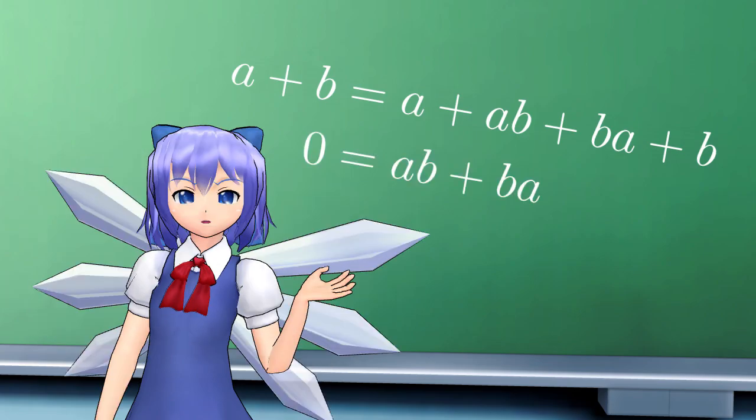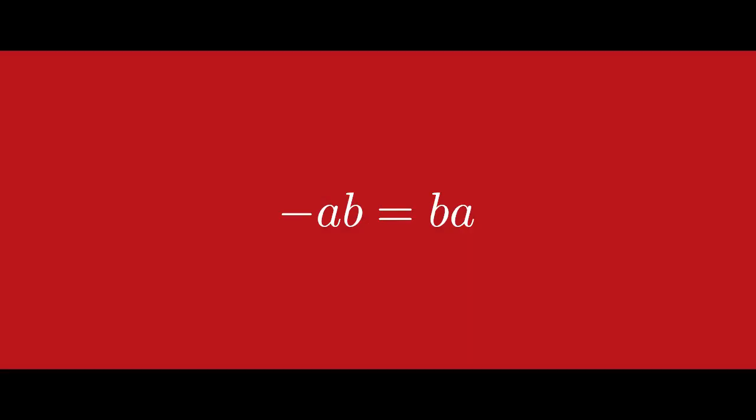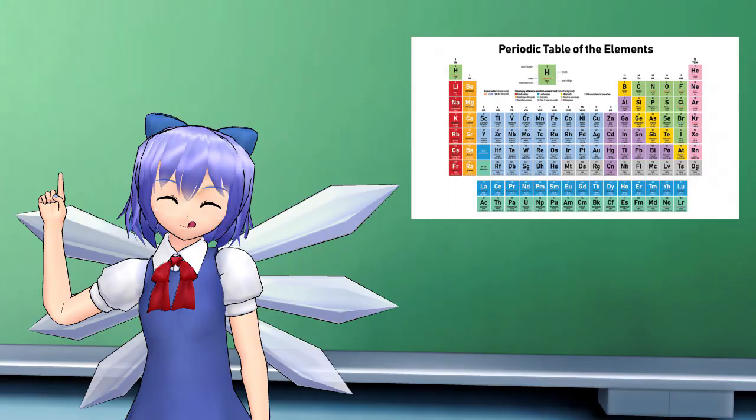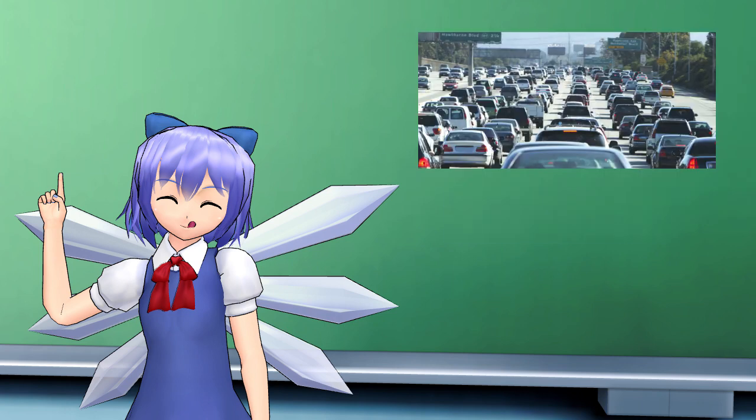So if we cancel the a and the b, we conclude that a times b plus b times a equals zero. And minus a times b equals b times a. But all elements in this ring equal their additive inverses, so a times b equals minus a times b. And that just means that a times b equals b times a. Since a and b were arbitrary elements, our boolean ring is commutative.